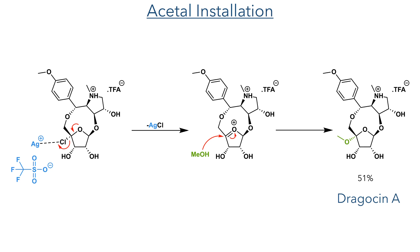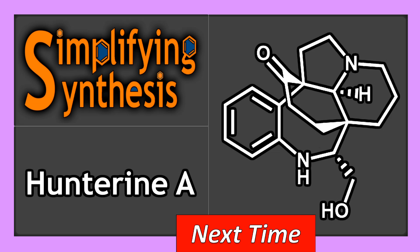To form Dragacin A, the chloride needed to be replaced with a methoxy group. This was done using silver triflate in methanol, analogous to a glycosylation reaction. The silver is quite halophilic and coordinates to the chloride, promoting its elimination to form an oxonium intermediate. This is attacked by the methanol, which is present as a solvent, installing the methoxy group and completing the formation of Dragacin A in a 51% yield. This was formed as a single diastereomer, with a stereochemistry guided by the macrocyclic ring, which likely distorts the conformation of the sp2 centre, leaving only one face open to attack. So that brings us to the end of this synthesis. Join me in the next video where we will look at the total synthesis of Hunterine A.